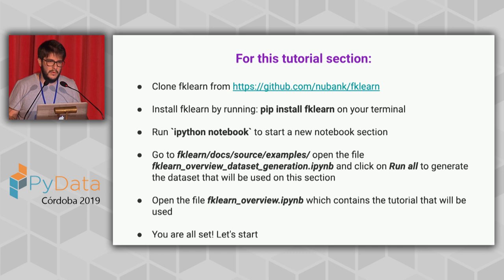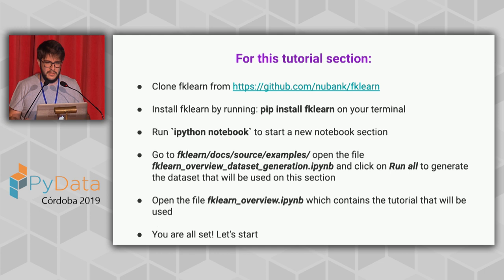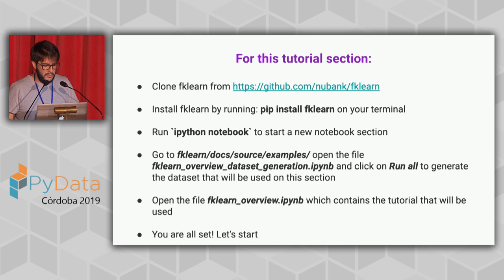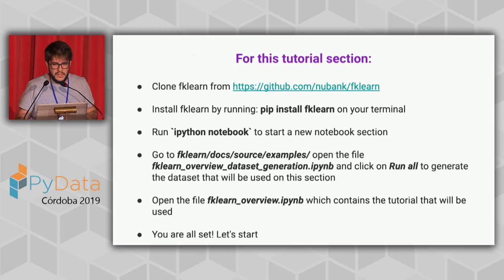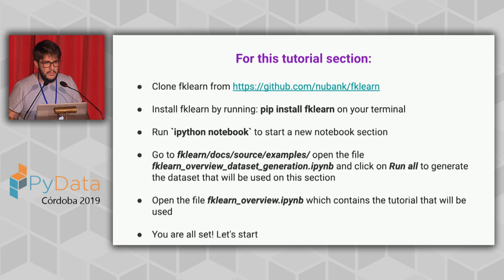For this tutorial, I will show all the code here, but if you want to follow via your own notebook, you can go to the FK Learn GitHub — as it's an open source project, you can clone the repo to your machine and install it. In the folder FK Learn doc source examples, you'll find two notebooks: one is the FK Learn overview dataset generation, which will generate the dataset we will use as a mock for our example, and the other is the FK Learn overview itself, which is the one I'll go through in detail.